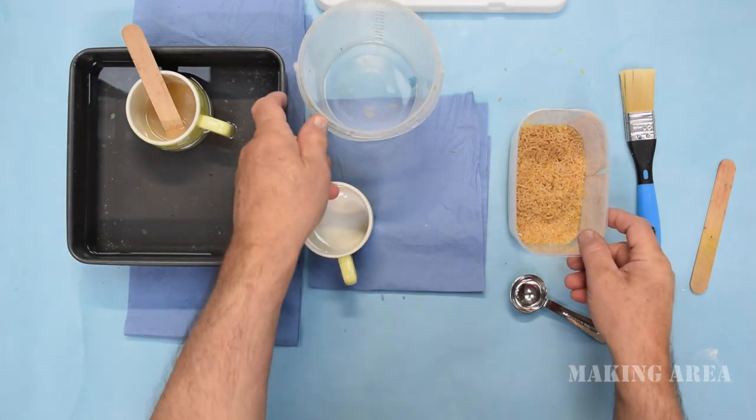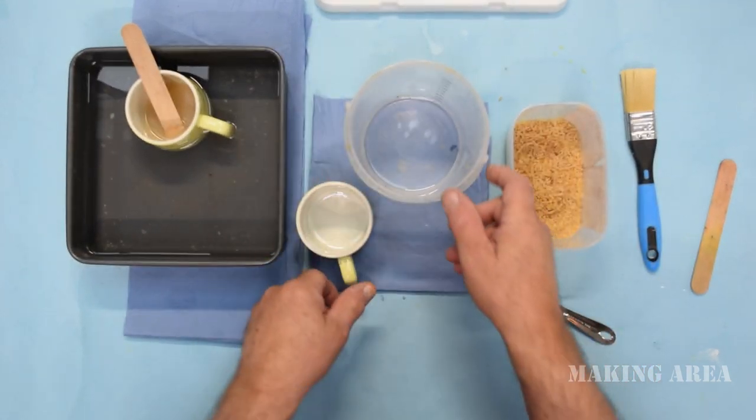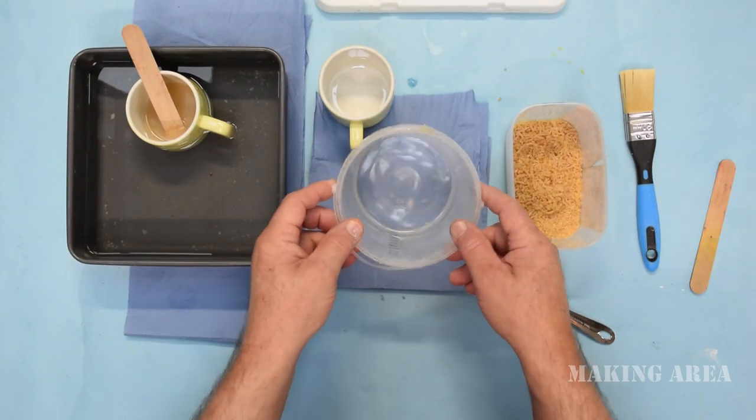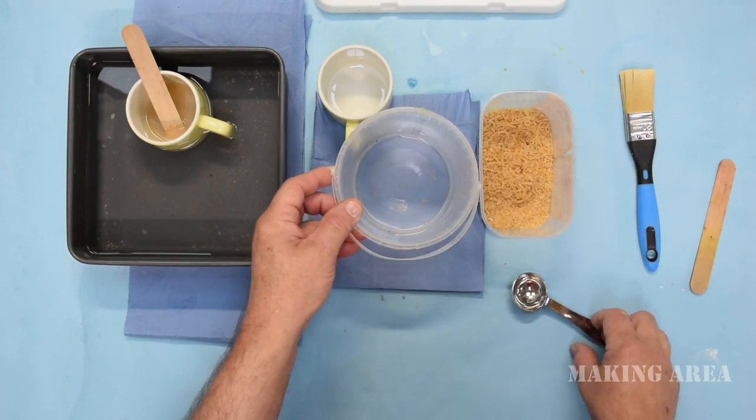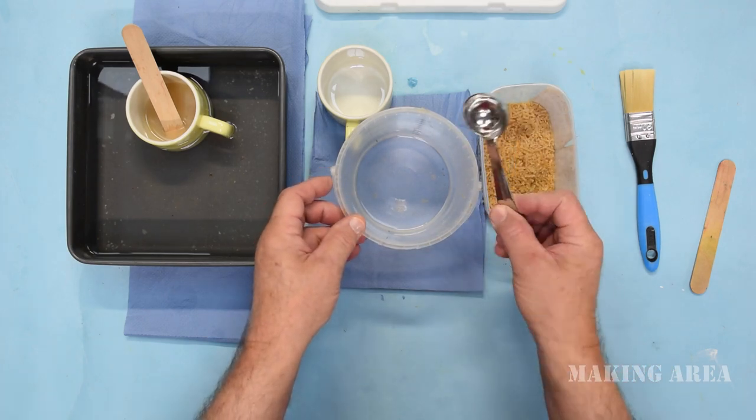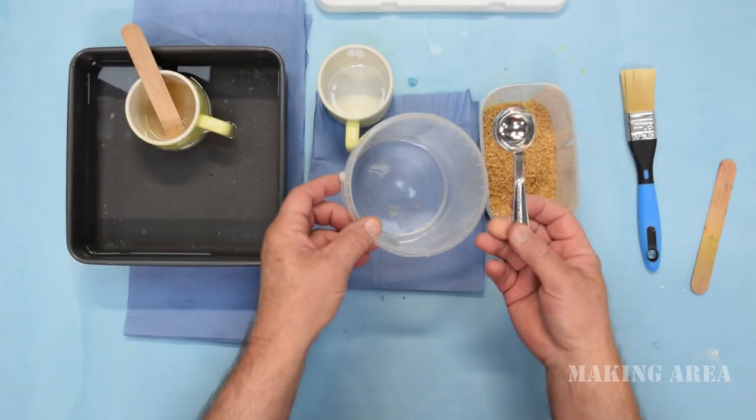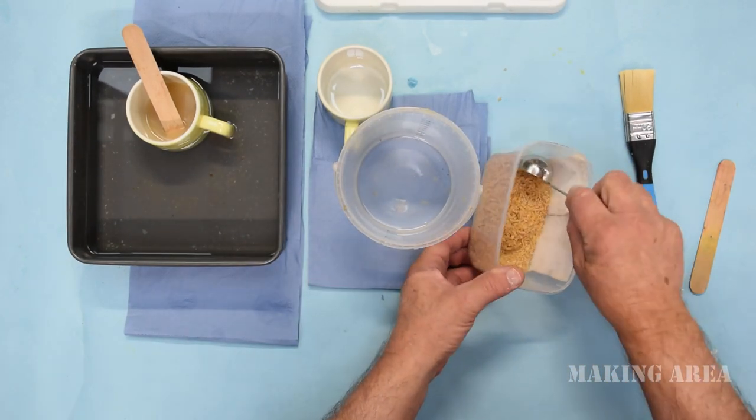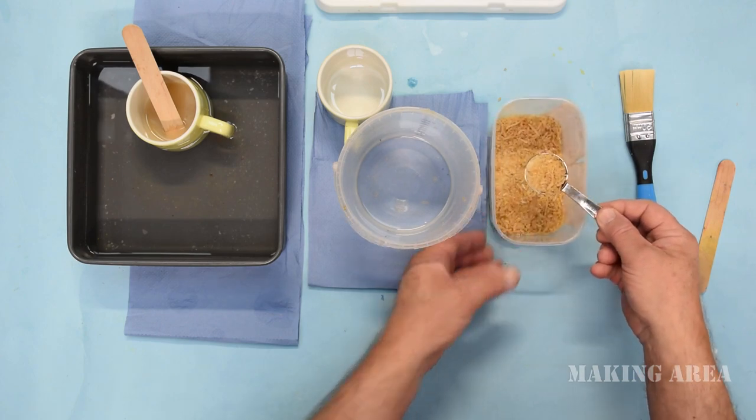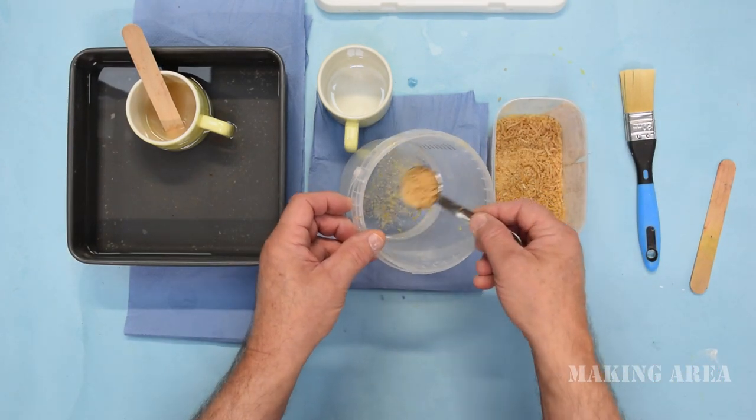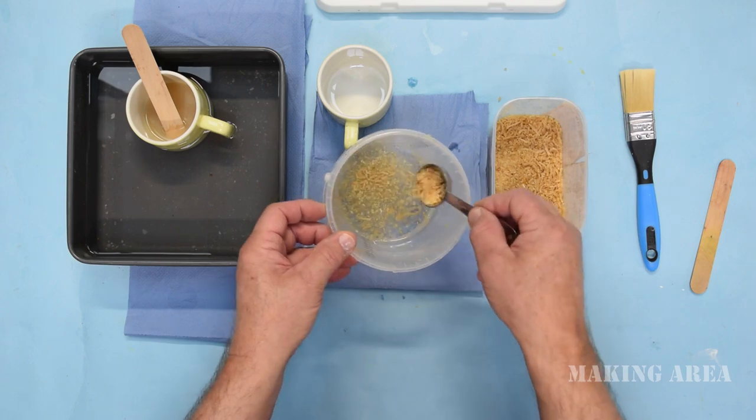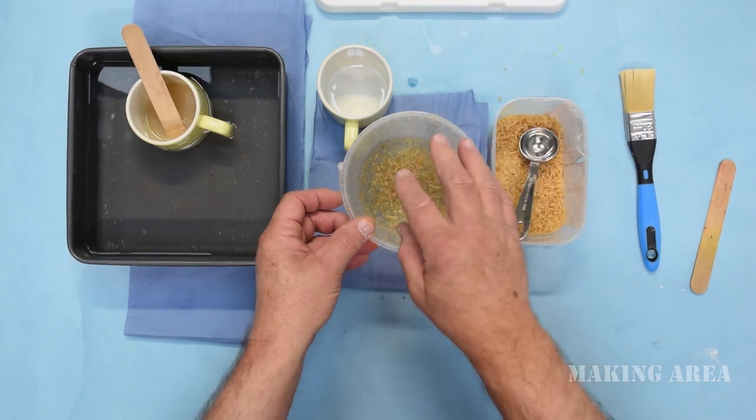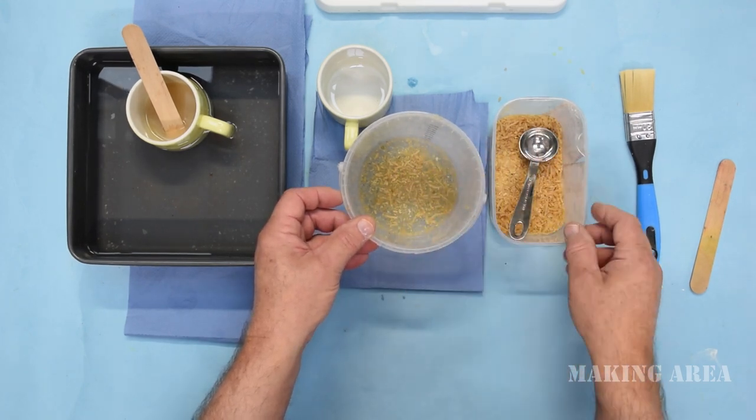We'll start with mixing some rabbit skin glue. Now I have here a bucket with cold water in, it has to be cold water, and I put 10 scoops of cold water into the bucket. I'm going to put one scoop of the rabbit skin granules and sprinkle it over the surface of the water. So it's 10 parts water, one part glue.